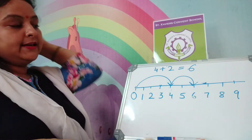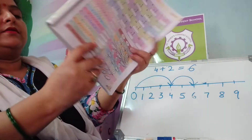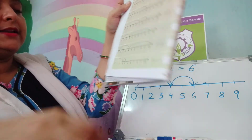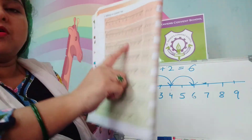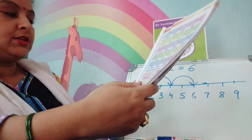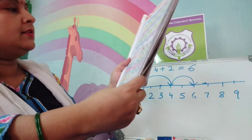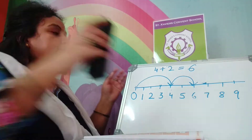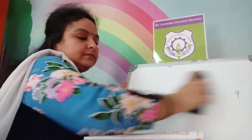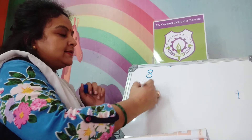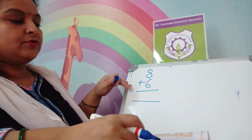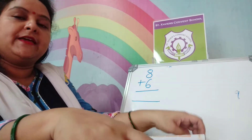You will do the other additions on the number line — it is on page number 40. You will do with the help of this on your book. Now on page number 41 there are different types of addition patterns.